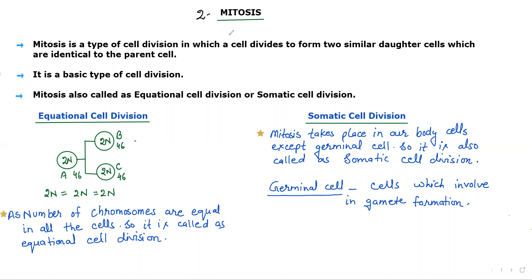The word mitosis has been derived from two words: 'mitos,' meaning thread, and 'osis,' meaning state or phase — that is, thread phase or thread state. This is because the chromosomes which appear at this stage are in the form of thread, and that is why the name mitosis is given.